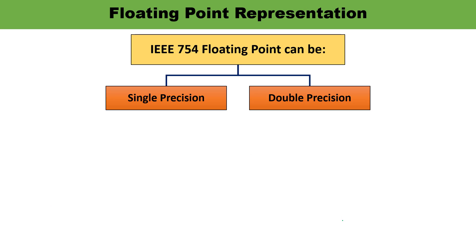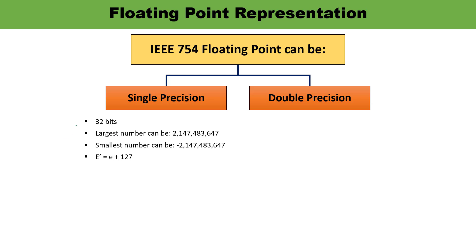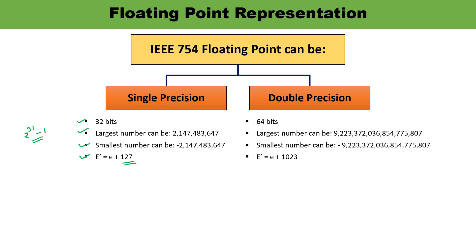IEEE 754 floating point representations come in two types: single precision and double precision. Single precision is 32 bits, with the largest representable number being 2^31 − 1 and the smallest being its negative. The bias added to compute the modified exponent for single precision is 127. Double precision is 64 bits, and the bias used to compute the modified exponent is 1023.